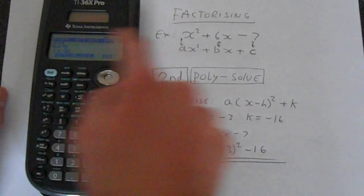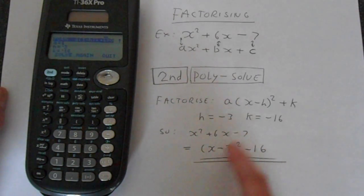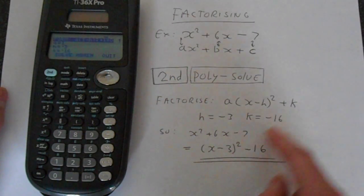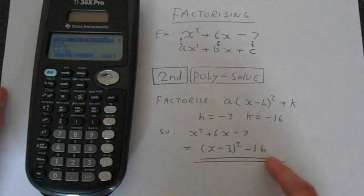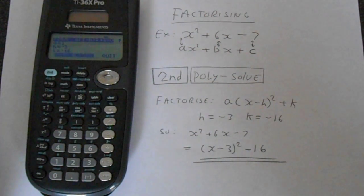And it's in this form, and a is of course 1, because it was 1 up there. So you can rewrite this x squared plus 6x minus 7 in this form by substituting here. So minus 3 goes in there, and minus 16 goes in there, and that's the equation factorized. You've completed the square, and the calculator's done it for you.